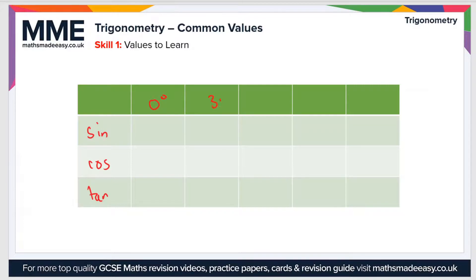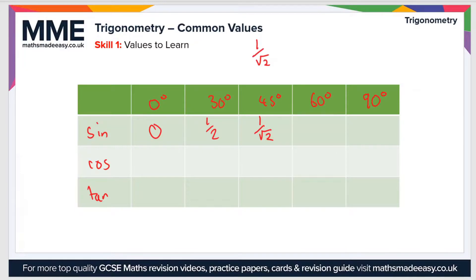You need to know these functions at 0°, 30°, 45°, 60°, and 90°. Starting with the sine function: sine of 0° is 0, because the sine function passes through the origin. Sine of 30° is one half. Sine of 45° is one over root two — if you rationalize the denominator by multiplying by root two over root two, you get root two over two, which is the same thing. Sine of 60° is root three over two, and sine of 90° is 1, the peak of the sine graph.